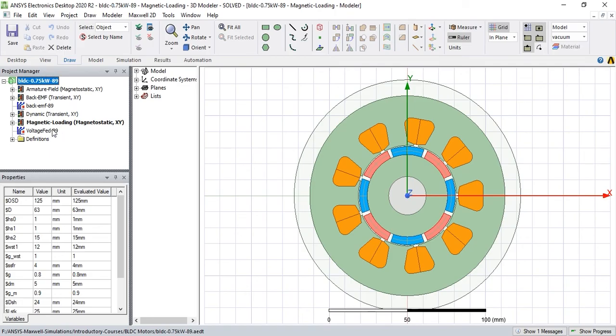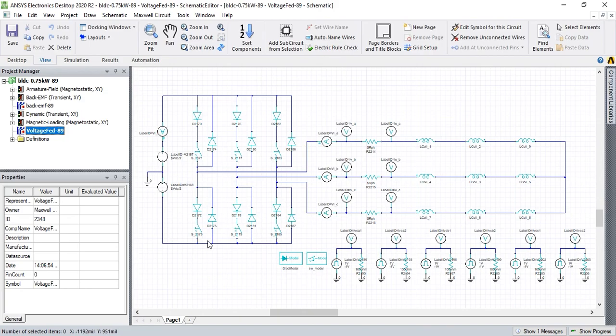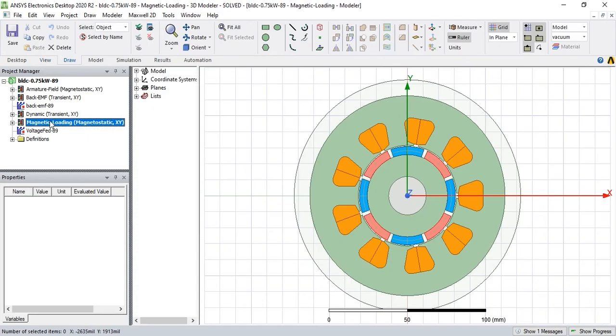And in ANSYS Maxwell software we can generate a drive circuit. As you can see here, this is a drive circuit of the BLDC motor that we will generate and we will cover it in next videos. We can link this external circuit to the finite element model and do a real-time dynamic simulation that is very good.